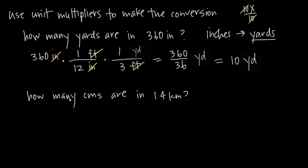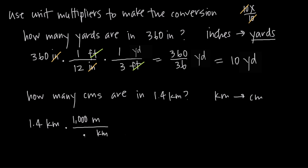Now let's look at a second example. In this one, we want to figure out how many centimeters are in 1.4 kilometers. So we're starting with kilometers and we need to get to centimeters. We know that we have 1.4 kilometers, so we put that on the left-hand side. Our units immediately tell us what we need to do — we know we're going to have to get rid of kilometers, so we're going to need kilometers in our denominator. We know that there are 1,000 meters in every 1 kilometer, so we can write that.